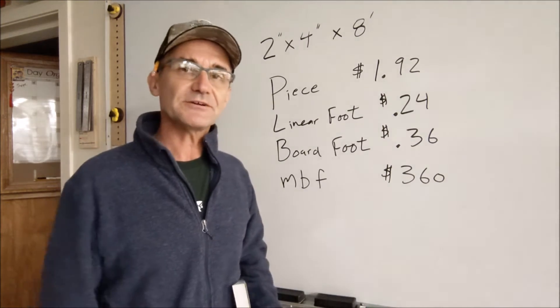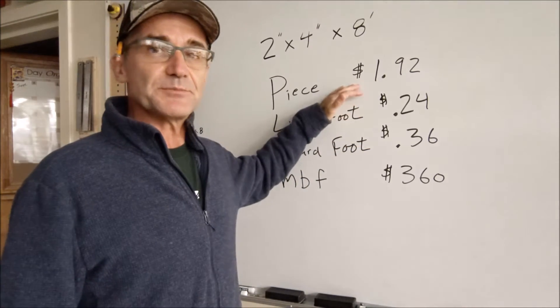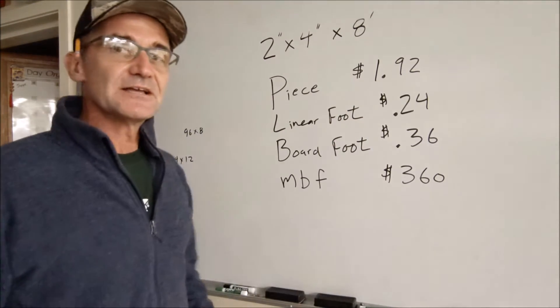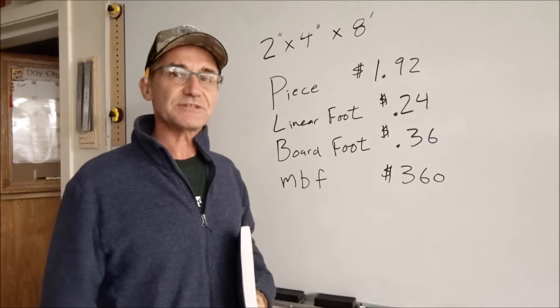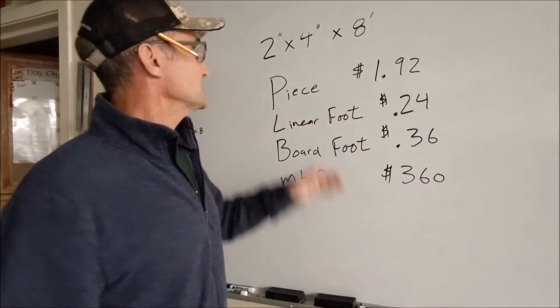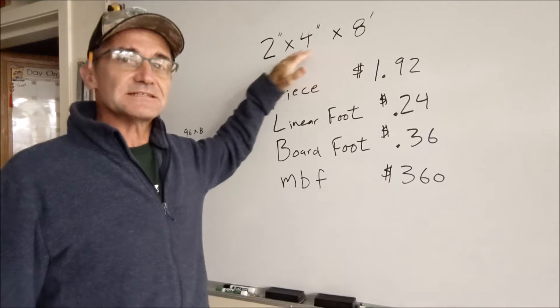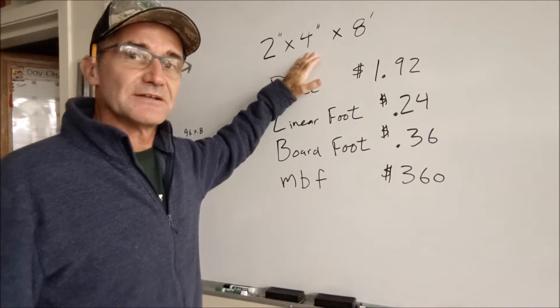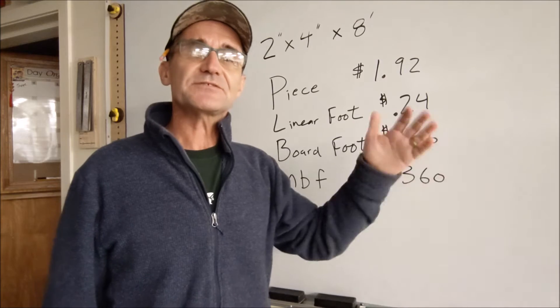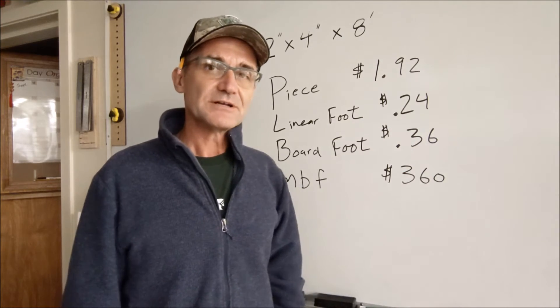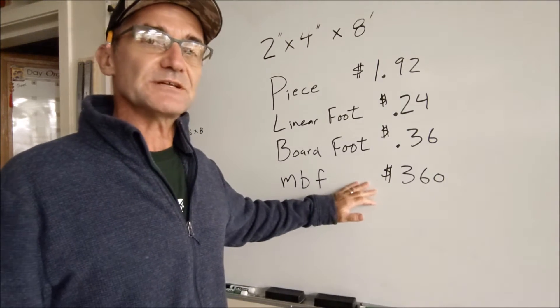I'll go over how to convert from one to the other and we'll figure out how to go from thousand board feet to the linear foot or from the price per piece to the board foot. If you understand that you'll be a much more effective contractor and carpenter because you'll be able to accurately price your jobs. One little note before we get started is that even though it's a two inch by four inch by eight foot board, the actual dimensions are one and a half by three and a half. That's the after planed or the machine dimensions of it, but they still sell it as a two by four and they still charge you as a two by four.